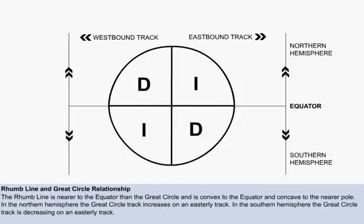For example, in the northern hemisphere on a westerly track, the great circle path is D for decreasing, and in the southern hemisphere in the westerly direction, the great circle track is I for increasing. This is a useful aid memoir and is used to solve many navigational questions.